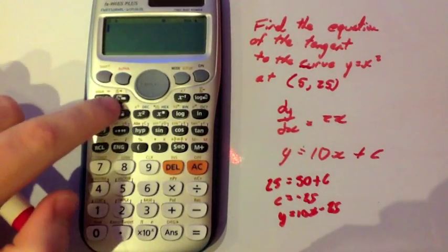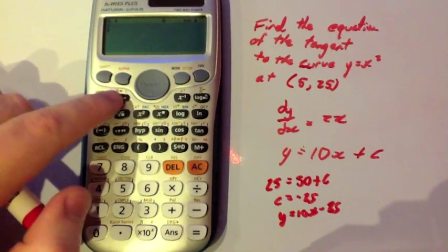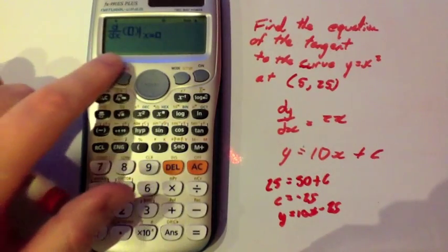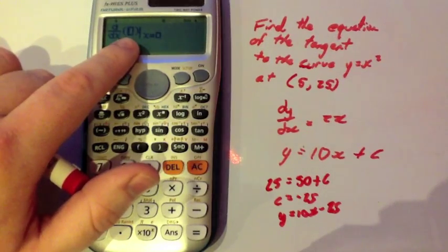What we're going to do is press shift, and then the button below the yellow d/dx, it's a yellow rectangle button. You can see here, it's got d/dx, that means it's going to differentiate, and then we're going to type in the function.